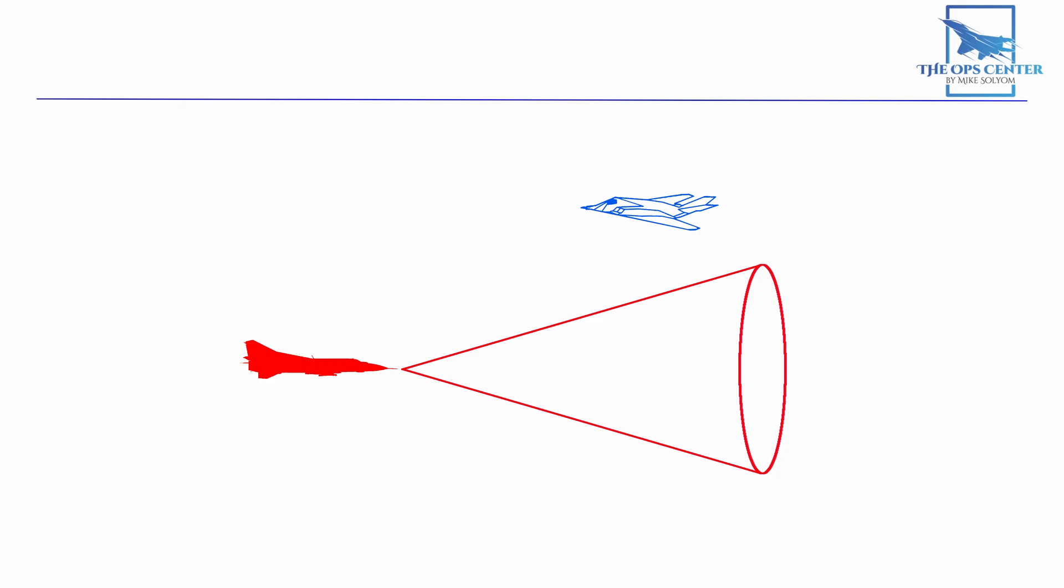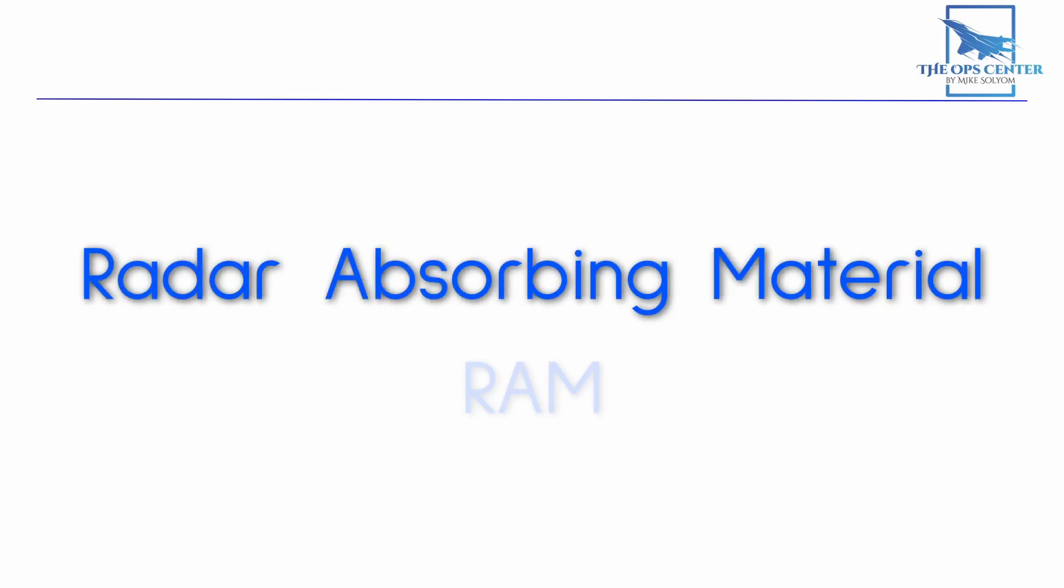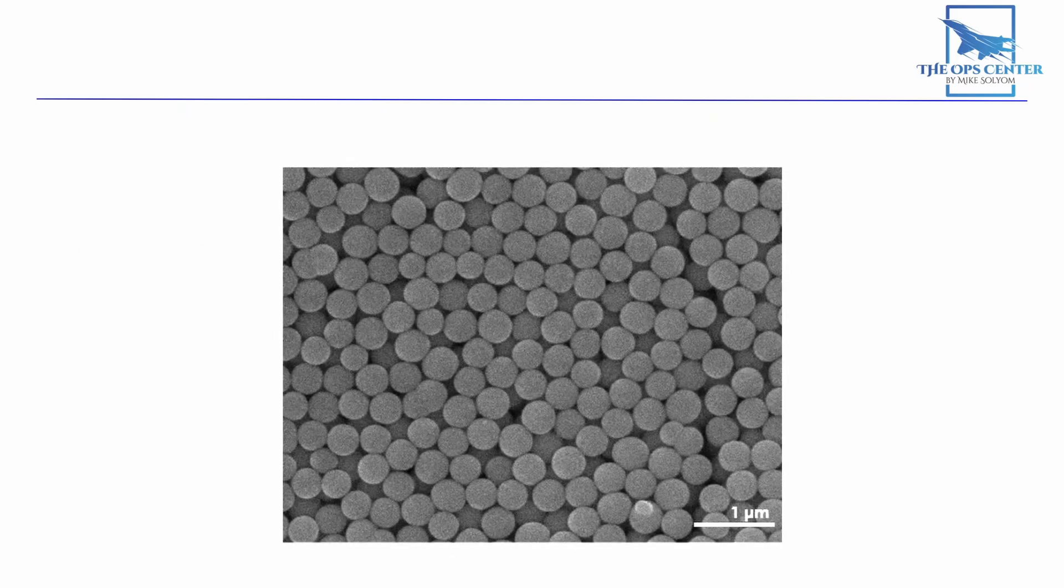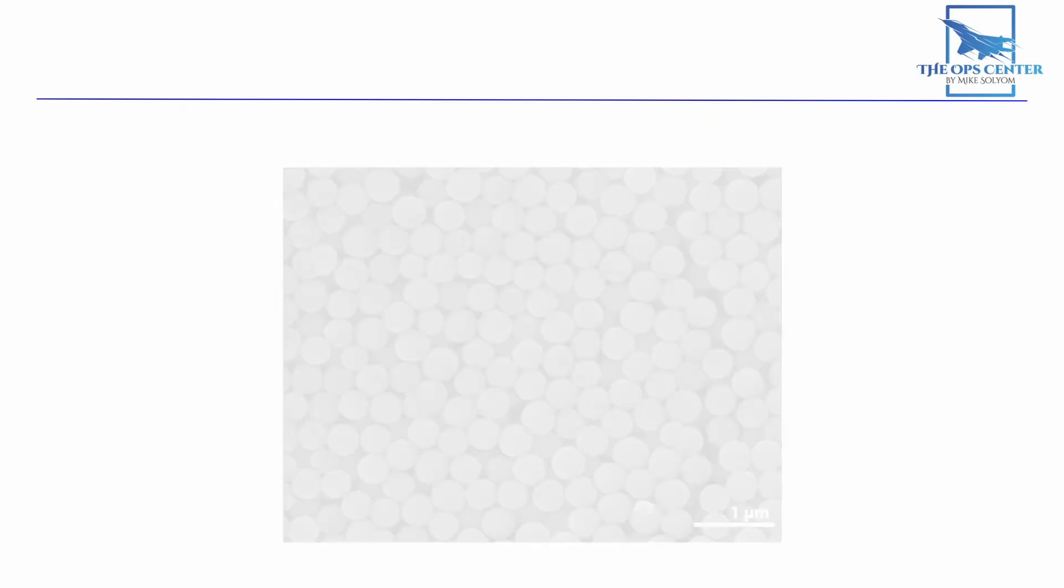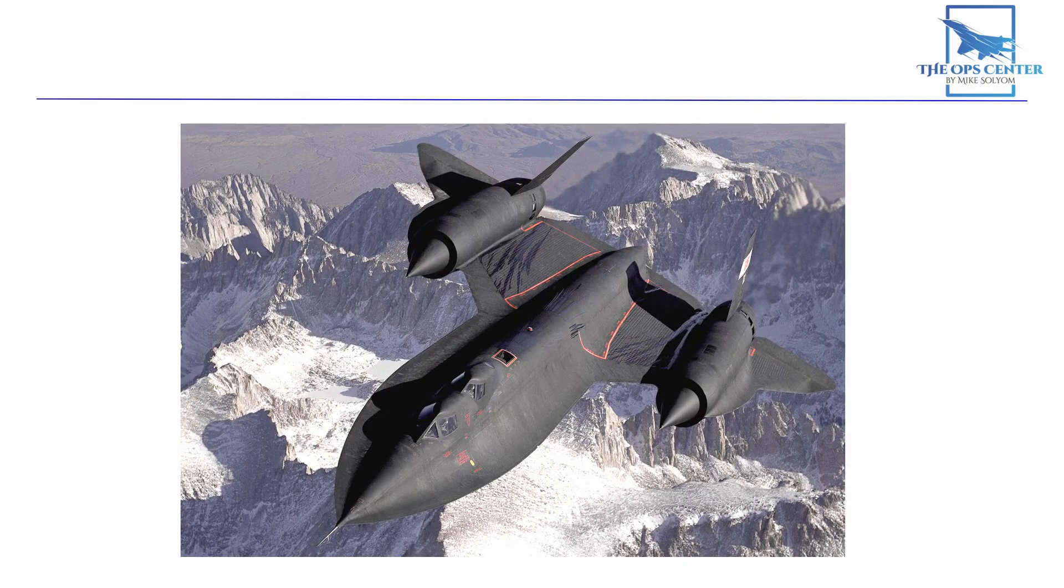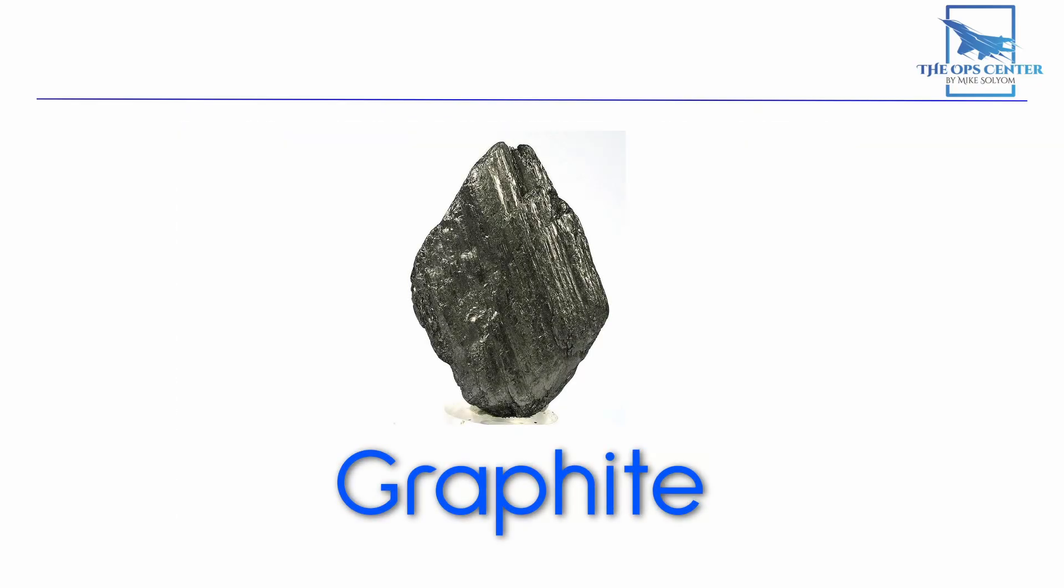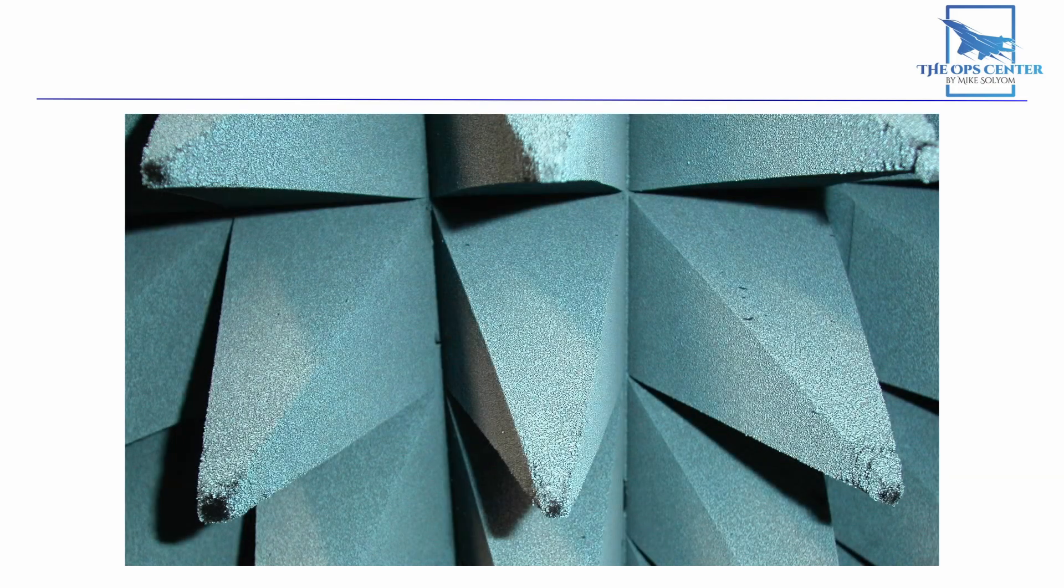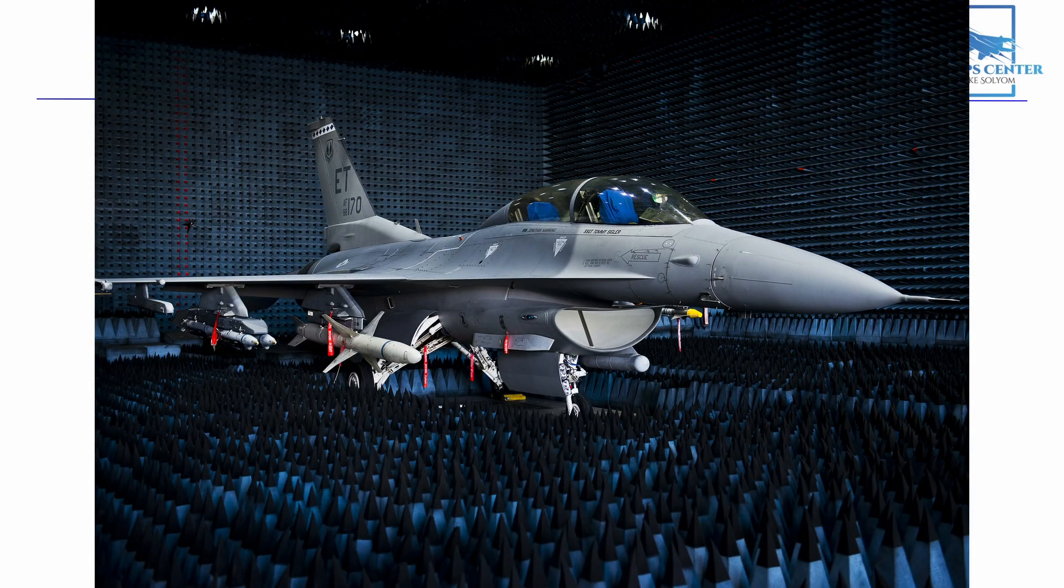In the earliest attempts at creating low-observable aircraft, builders tried using radar-absorbing material. One material that works to absorb radar waves is a type of paint that consists of a non-conductive substance with tiny particles of iron suspended within it. This was used on the SR-71, but it had limited success. It's not nearly as stealthy the way the B-2 is.